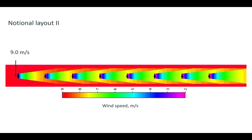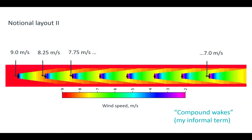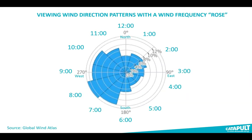However, in certain layouts what I call a 'compound wake' can form. To understand wind directions, we use a wind rose — each petal shows the percentage of the year the wind blows from a particular direction, summing to 100 percent across the full year.